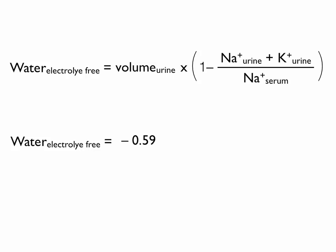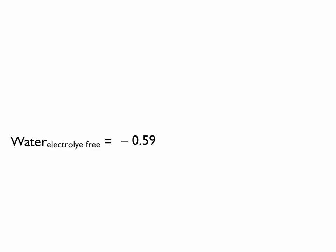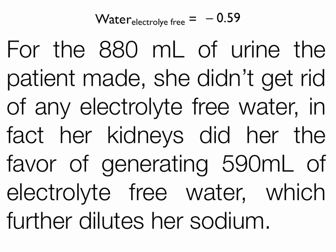What you've got to understand is, what does it mean to have negative electrolyte-free water? Every time this patient makes 880 cc's of urine, they don't get rid of any electrolyte-free water. In fact, her kidneys do her the disservice of actually making more electrolyte-free water, further diluting her serum sodium.